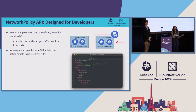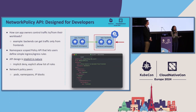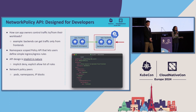The network policy API is namespace scoped, which is why you see the namespace field in the metadata. This is a sample YAML that lets you express simple ingress and egress rules. One thing to keep in mind is that it is implicit in nature: the first network policy you create in your namespace gives you that deep implicit default deny. Any allow rules you add on top define who can talk to you. The peers you can express today are namespaces, pods, and IP blocks.